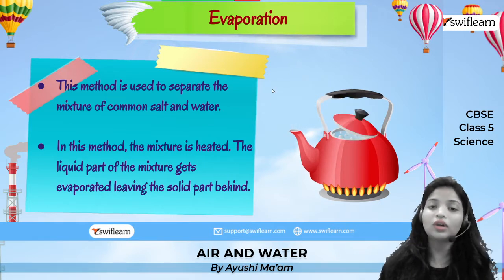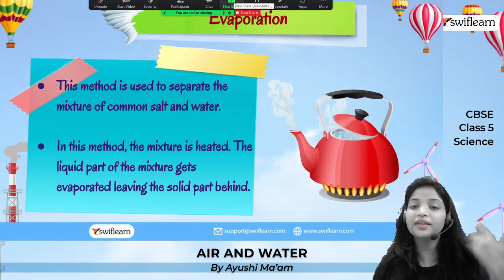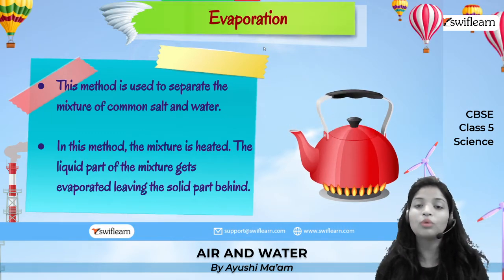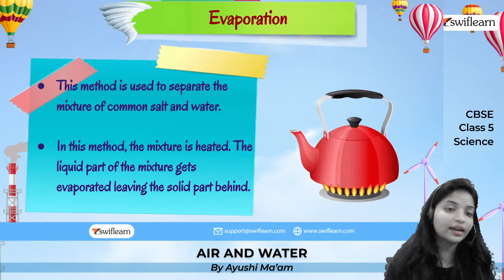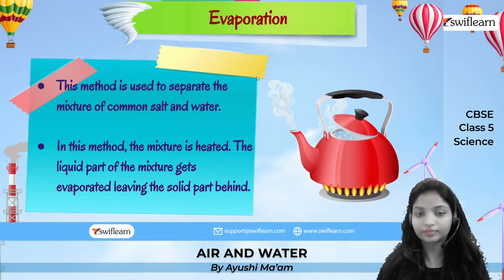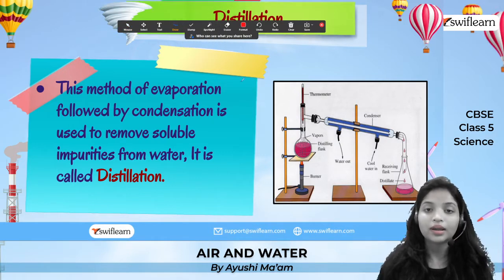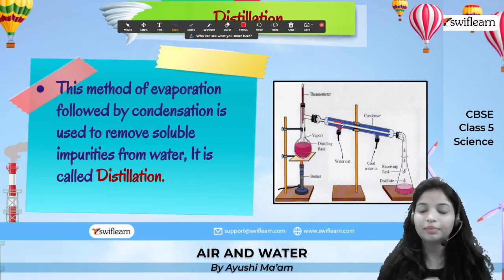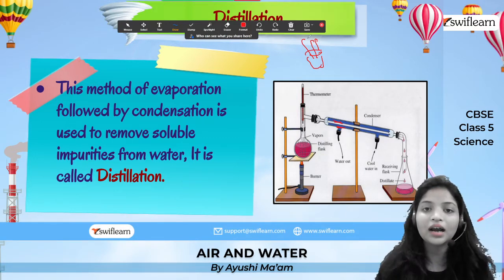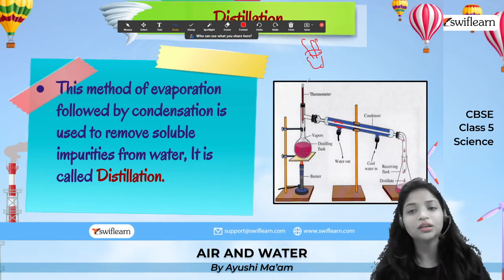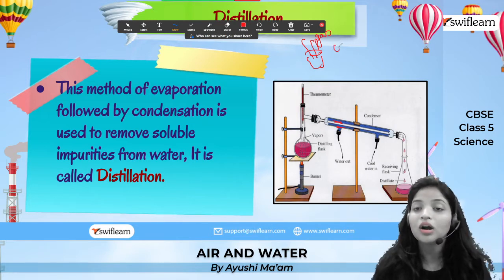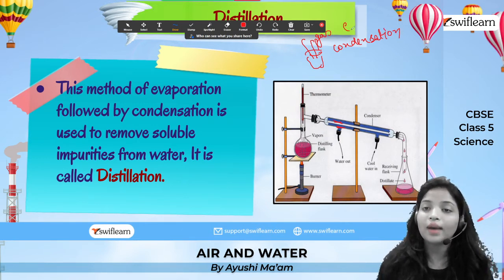One process for removing soluble impurities is distillation. When you evaporate water it becomes vapor — a gas. But if I want that water back, I need to cool it down, and when we convert gas back to liquid we call that condensation. So evaporation plus condensation together form a process called distillation.